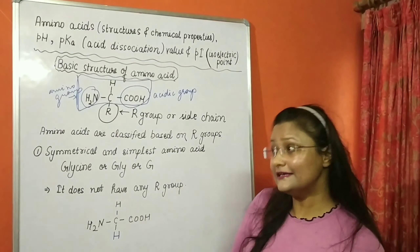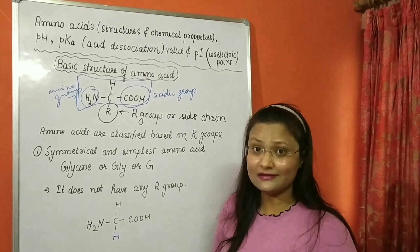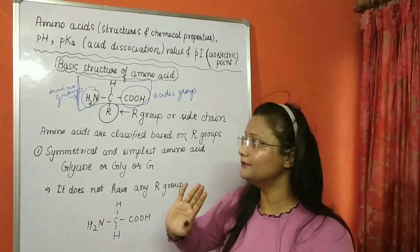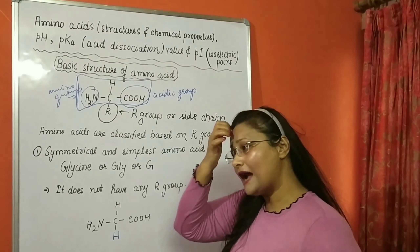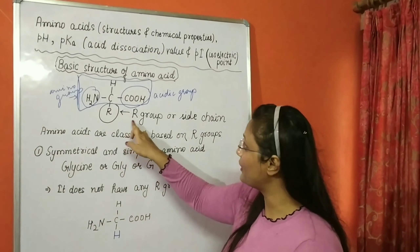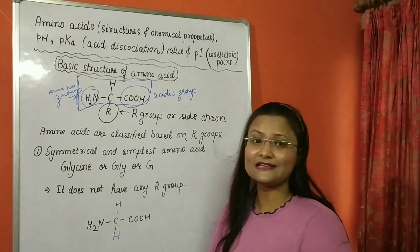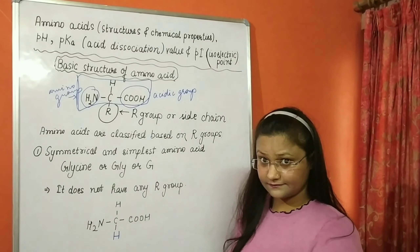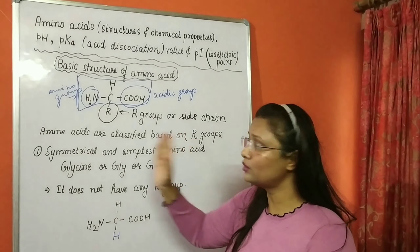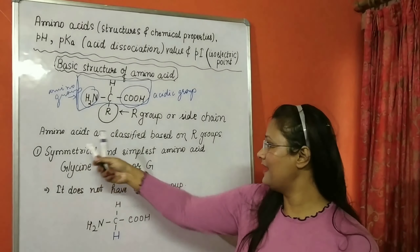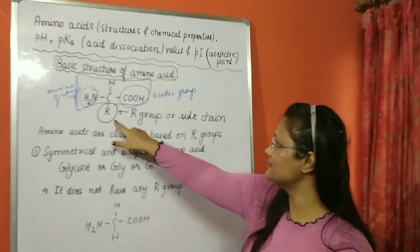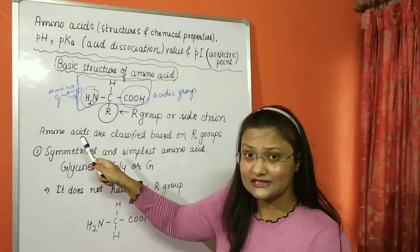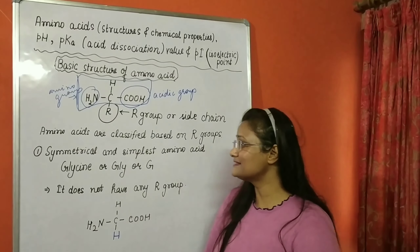The R group decides whether an amino acid is polar, non-polar, acidic, or basic. The COOH and NH2 groups only show the acidity and basicity, but the actual chemical property of an amino acid depends upon its R group, which is also known as the side chain. Amino acids are classified based on this R group; the entire backbone structure is exactly the same in all amino acids, and they differ from each other because of the R group.